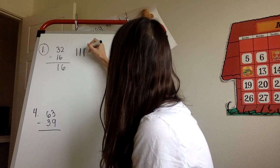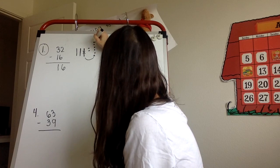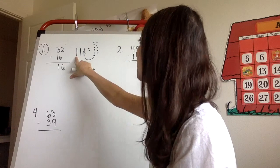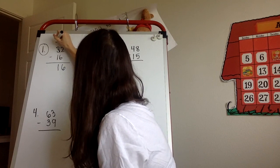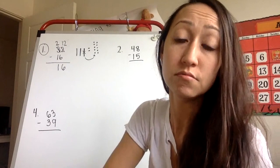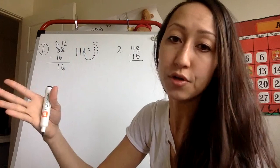So how does that look? Well, I'm going to trade 1 ten for 10 ones. My number here is still 32. I just have it written a little differently. I have it written as two tens and 12 ones. So I'm going to show that up here. So I have two tens and I now have 12 ones. Do I still have 32? I do because two tens and 12 ones is still 32. I haven't subtracted anything yet.